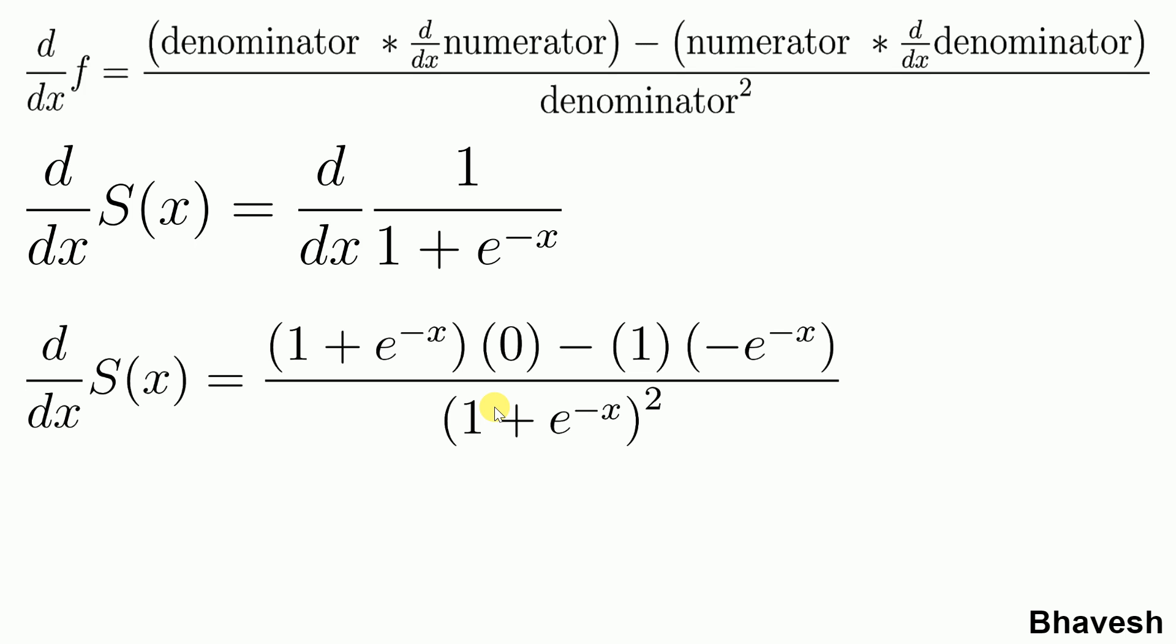After applying the quotient rule I am left with this equation. So the derivative of sigmoid function essentially is e to the power minus x upon 1 plus e to the power minus x the whole square. Going through a lot of literature you wouldn't find this implementation that commonly used because of certain reasons. So we will try to modify this derivative that we have just computed for the sigmoid function in a format that becomes very easy for computation when we actually implement a neural network.